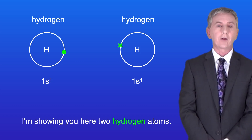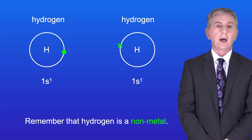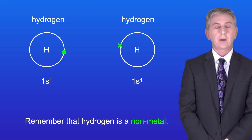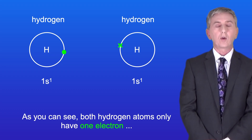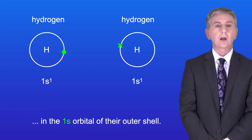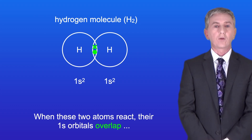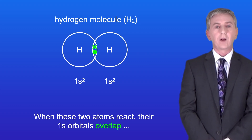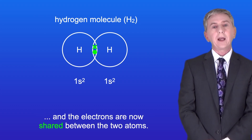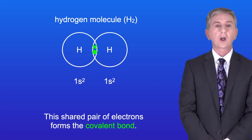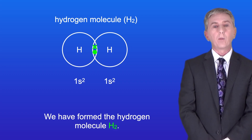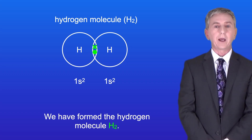Here are two hydrogen atoms, and remember that hydrogen is a non-metal. As you can see, both hydrogen atoms only have one electron in the 1s orbital of their outer shell. When these two atoms react, their 1s orbitals overlap and the electrons are now shared between the two atoms. This shared pair of electrons forms a covalent bond and we form the hydrogen molecule H₂.